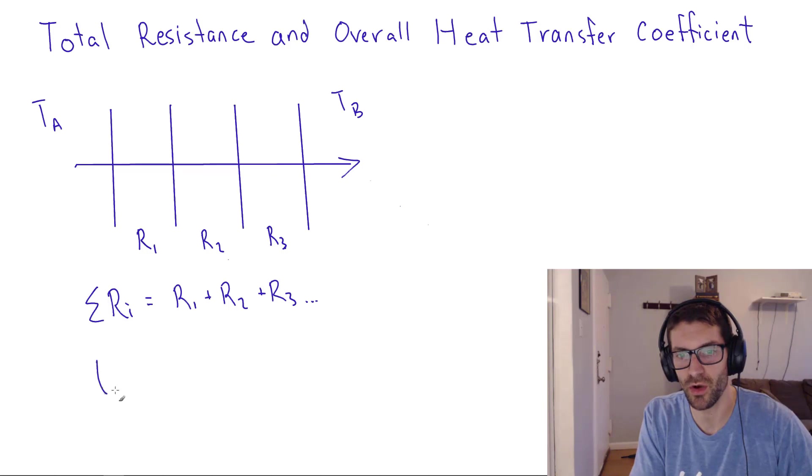we can define something called the overall heat transfer coefficient, which is given the variable U, which is one over the sum of those resistances. So it has inverse units.